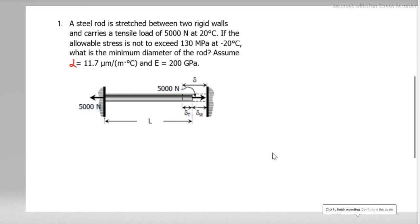Problem 262. A steel rod is stretched between two rigid walls and carries a tensile load of 5000 Newton at 20 degrees Celsius. If the allowable stress is not to exceed 130 MPa at negative 20 degrees Celsius, what is the minimum diameter of the rod? Assume coefficient of linear expansion α = 11.7 μm/(m·°C) and modulus of elasticity E = 200 GPa.